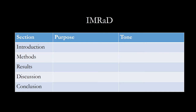IMRAD format refers to a paper that is structured by four main sections: Introduction, Methods, Results, and Discussion. This is a really common format used in scientific writing, and you're probably all familiar with it. We'll talk through each section to explain its purposes and goals.